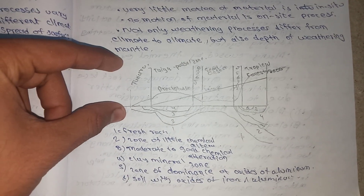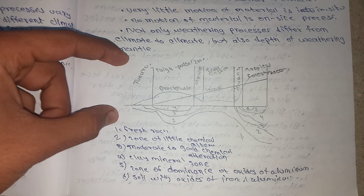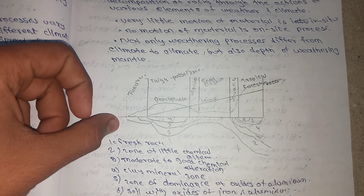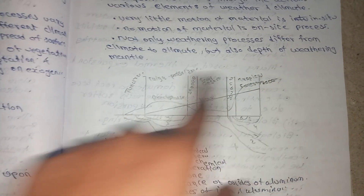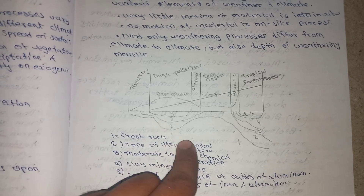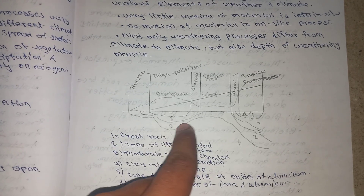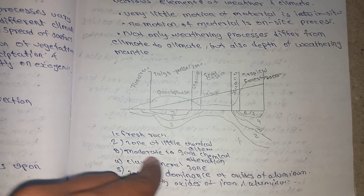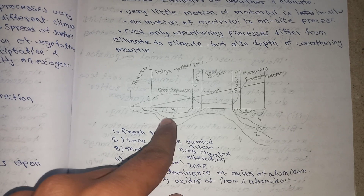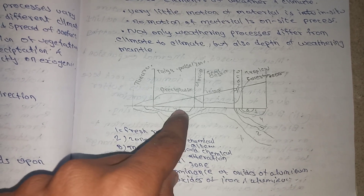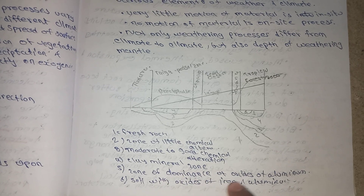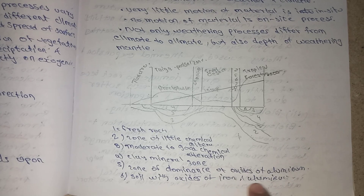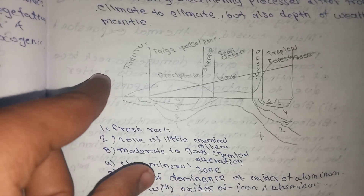Here you can see a soil layer representing the depth of a weathering mantle. The first zone is fresh rock. The second is a zone of little chemical alteration. The third shows moderate to good chemical alteration. The fourth is a clay mineral zone. The fifth is a zone of dominance of oxides of aluminium. The sixth is soils with oxides of iron and aluminium.